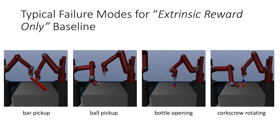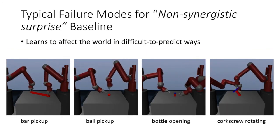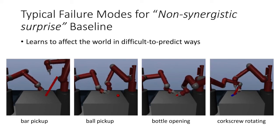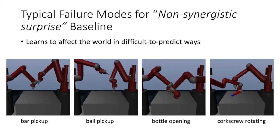The non-synergistic surprise baseline has very interesting failure modes. It learns to affect the world in difficult-to-predict ways, which does not always translate to good performance on the task.